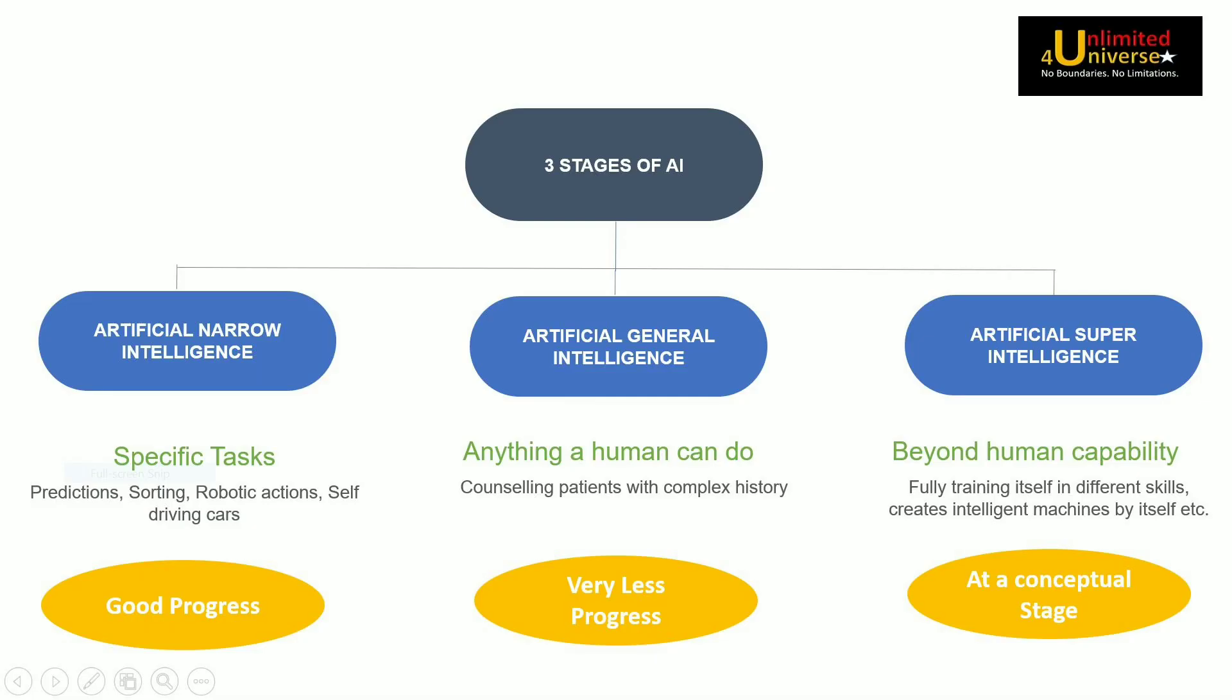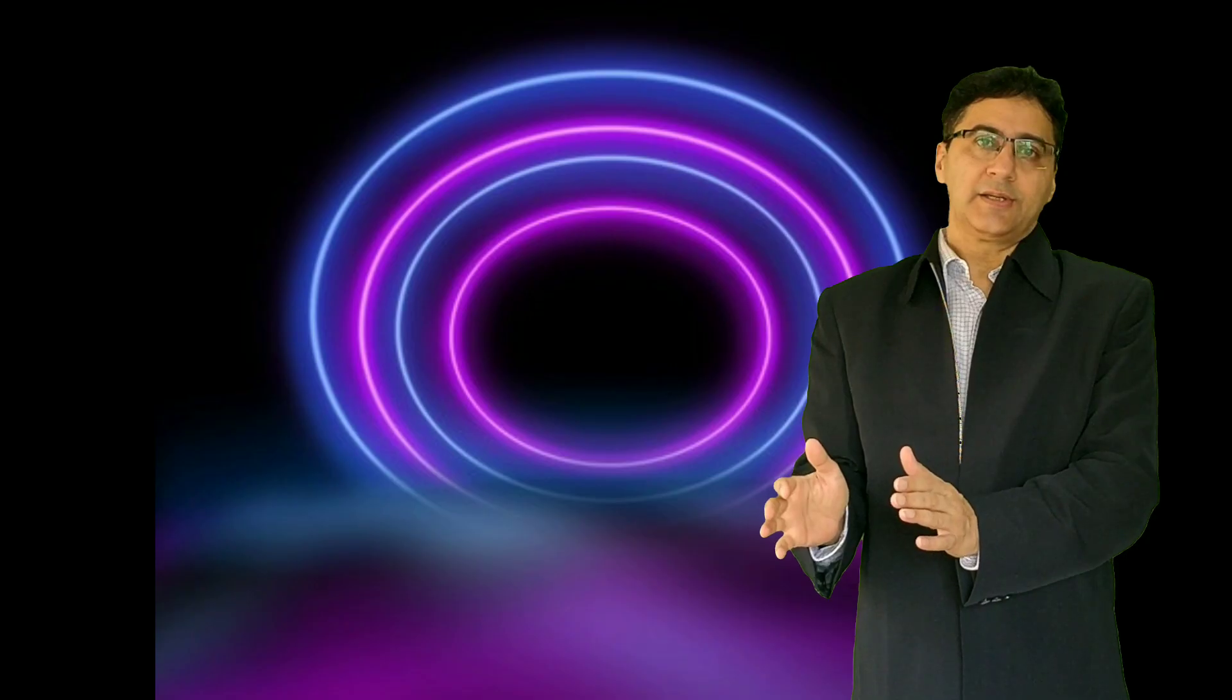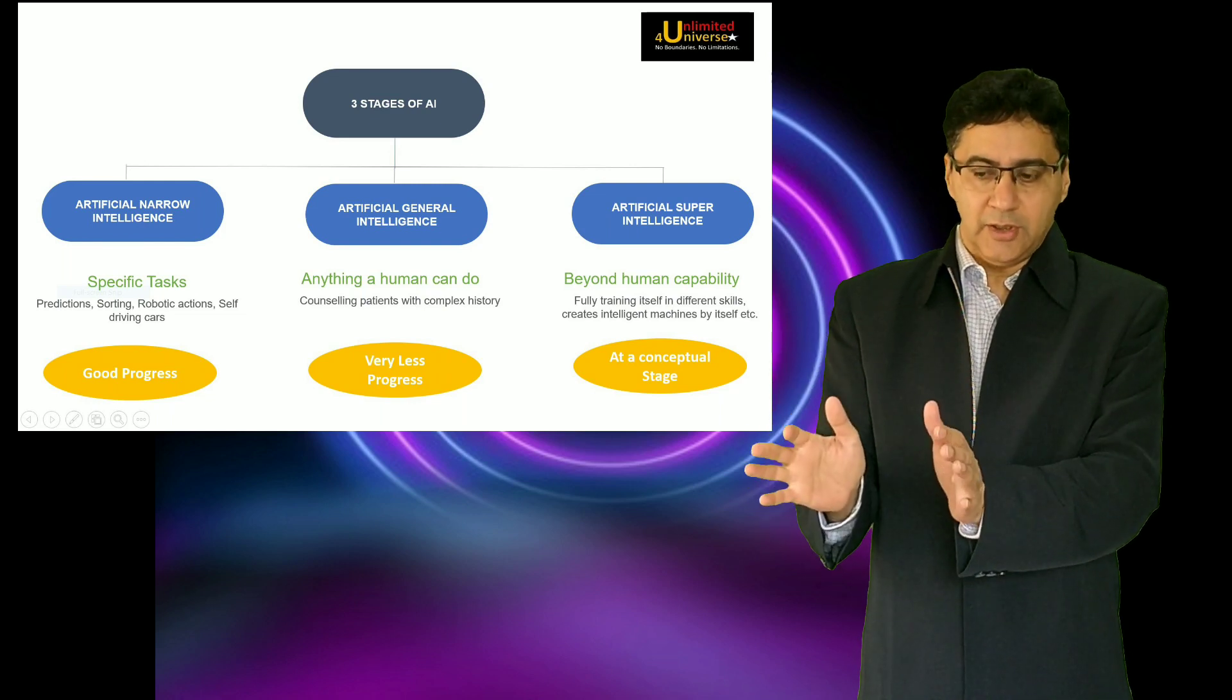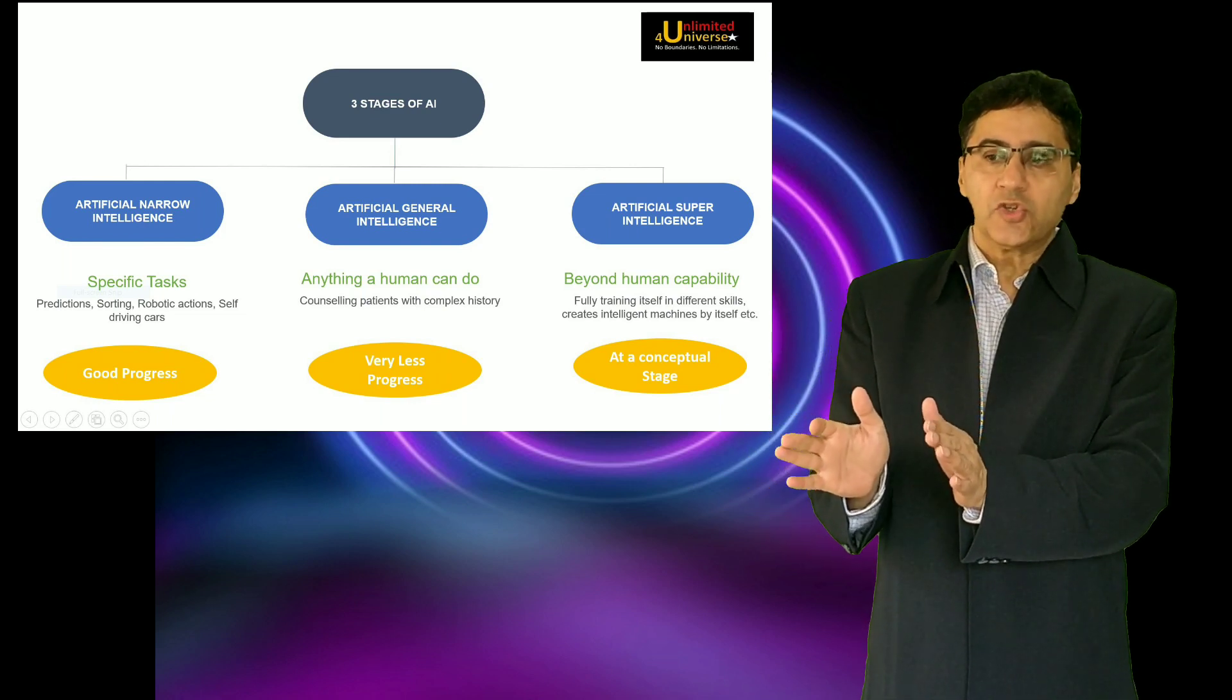If you consider the three stages of evolution of Artificial Intelligence then it can be subdivided into Artificial Narrow Intelligence, Artificial General Intelligence and Artificial Super Intelligence. Artificial Narrow Intelligence is something that this structure is designed to do specific tasks.